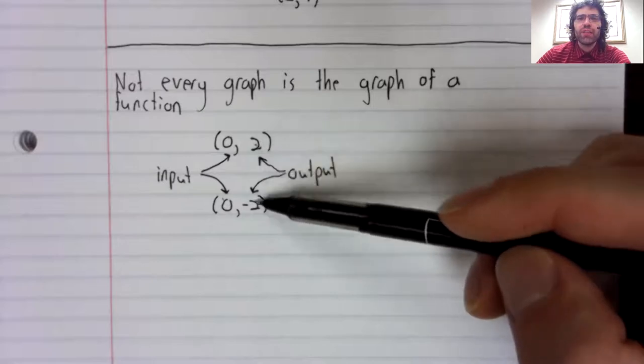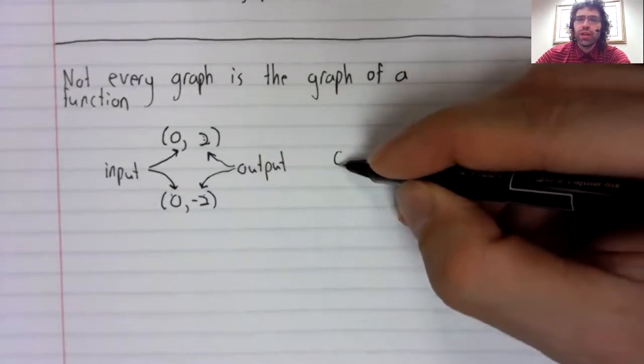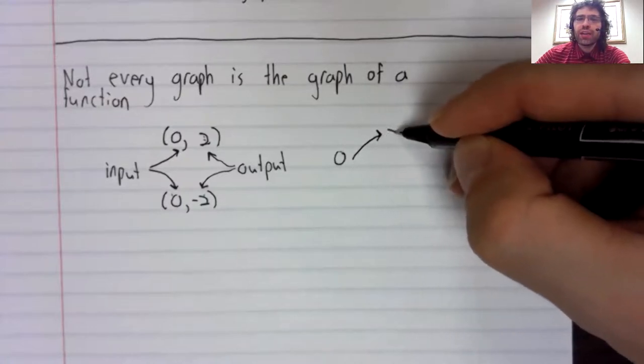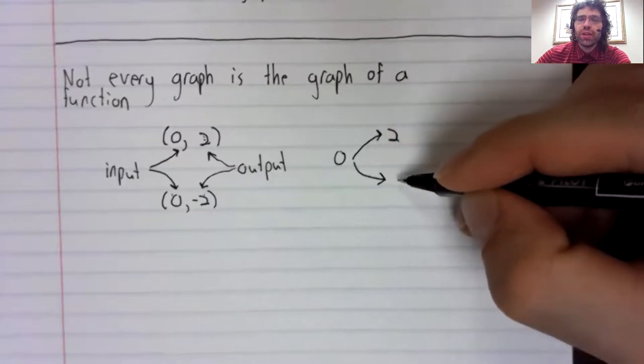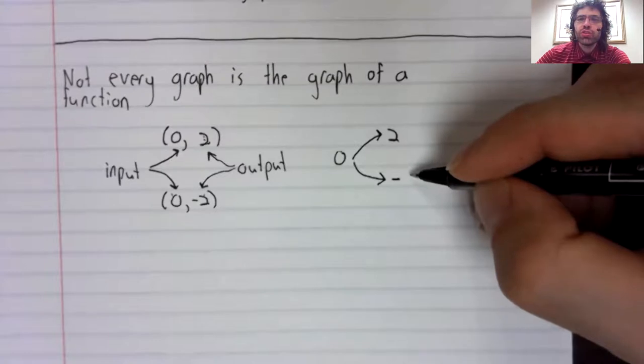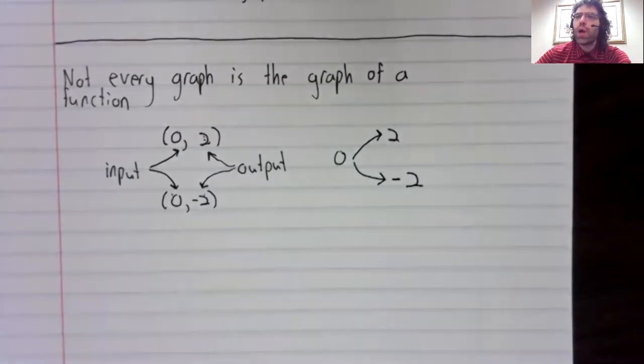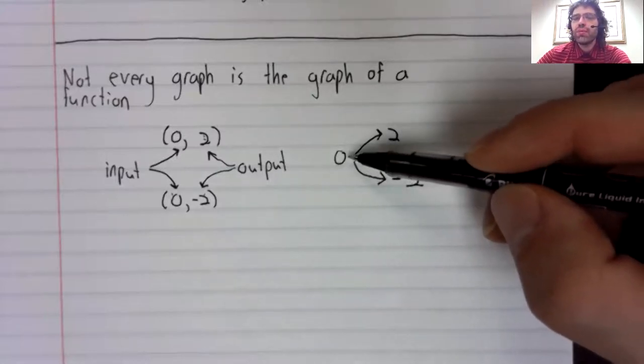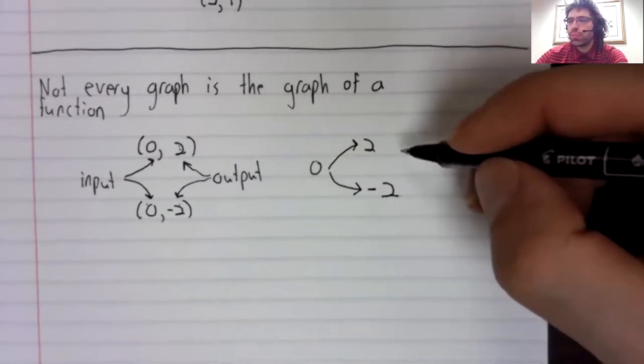And then we have two different outputs. And the one thing I said about a function: a function is just a rule. There is only one condition it has to satisfy—a single input cannot have multiple outputs.